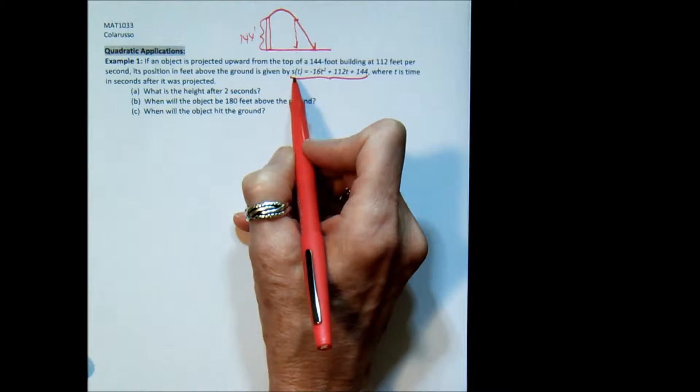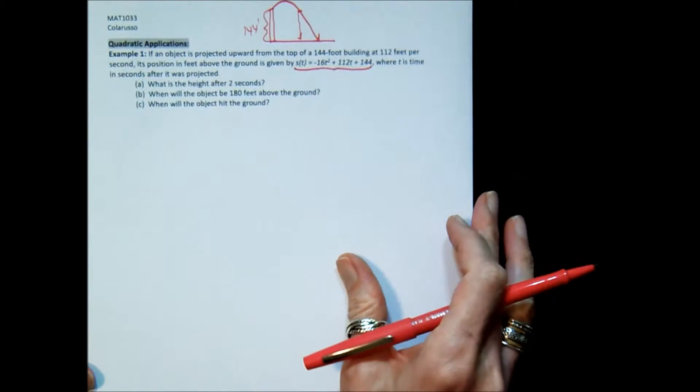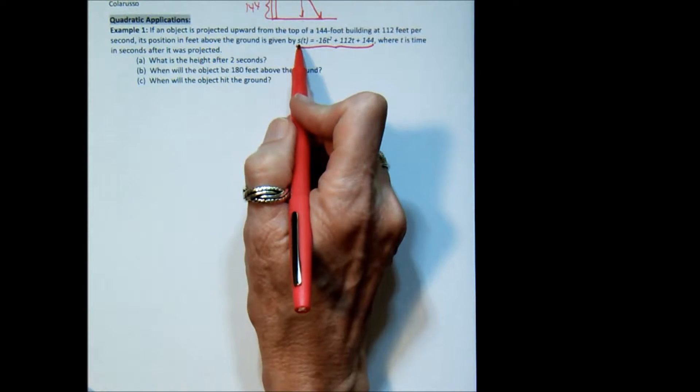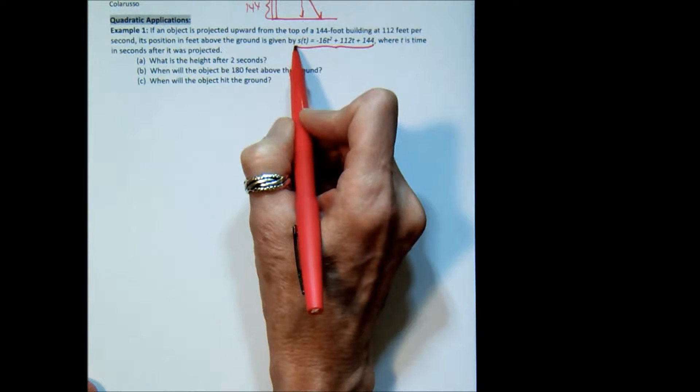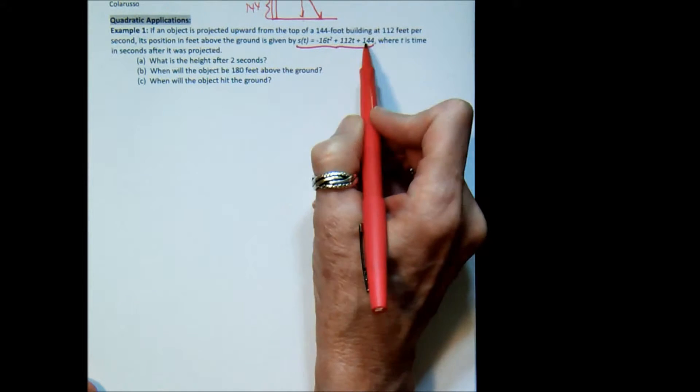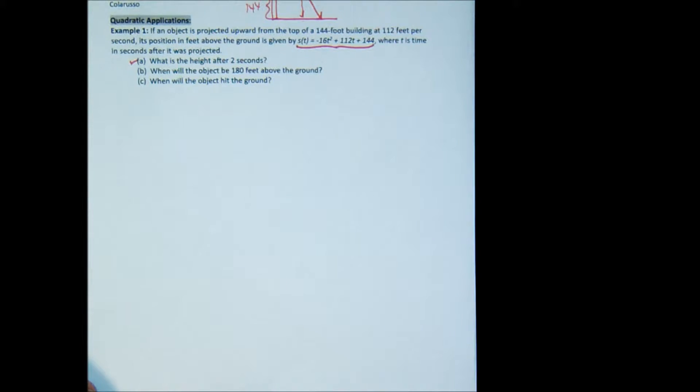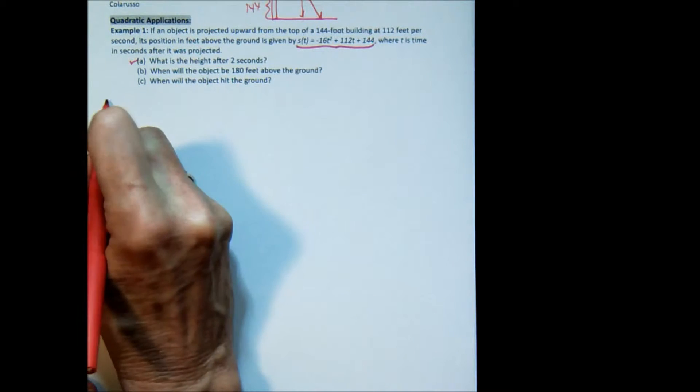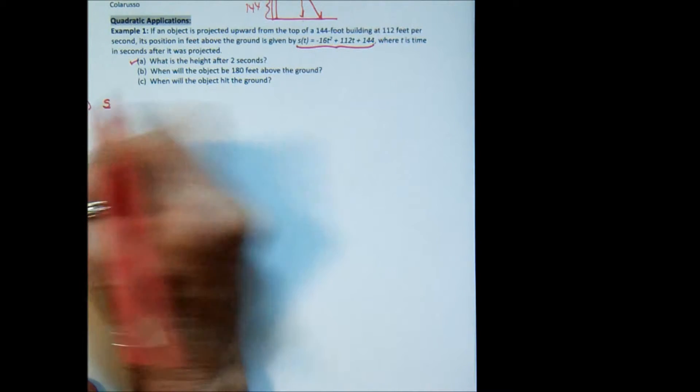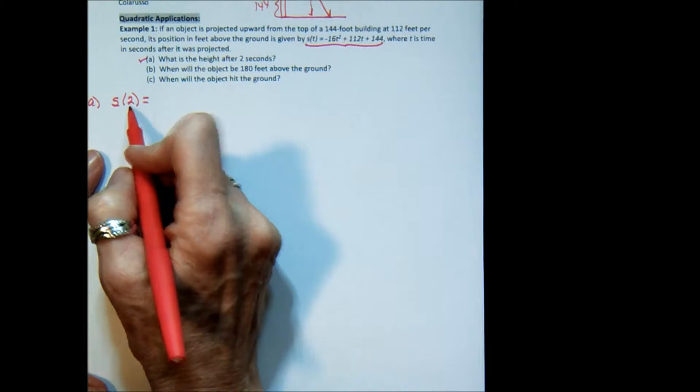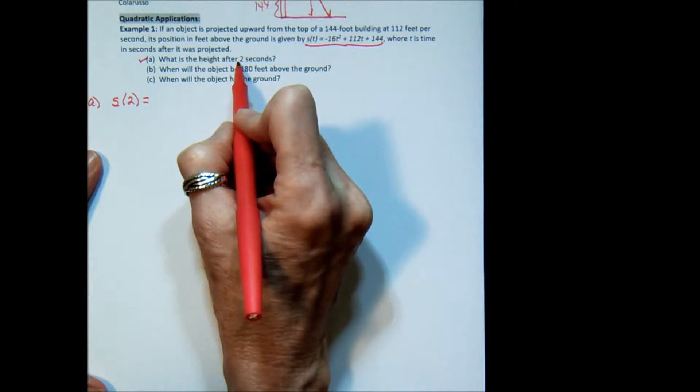Remembering that when we use function notation, the left-hand side of the equation is just the announcement. There's no work to be done here. This just means, hey, the height at any given time is, and then here's your equation. So let's look at the first question. It's what is the height after two seconds? Another way to say that is, what is s of 2?